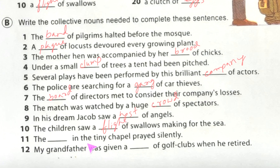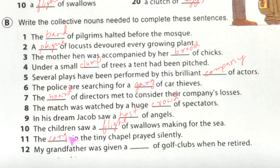Eleven: 'The dash in the tiny chapel prayed silently.' This one is harder because there is no direct word as a clue, but you should understand that in a chapel people worship, so worshippers' collective noun is 'congregation.' Next: 'My grandfather was given a dash of golf clubs when he retired' — golf clubs' collective noun is 'set,' so we write 'set.'